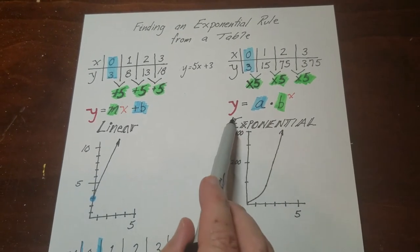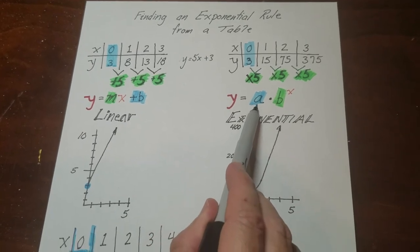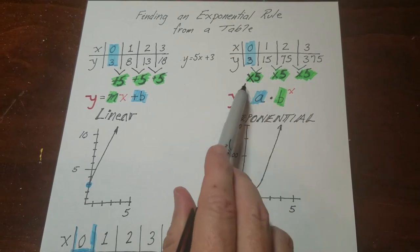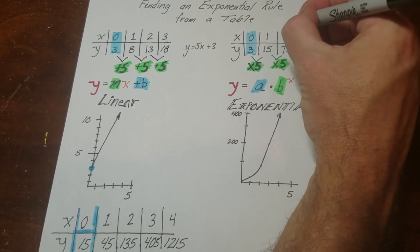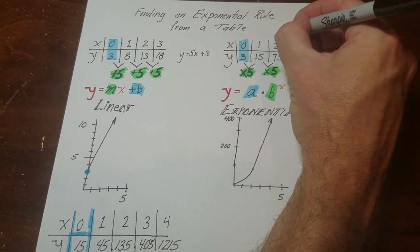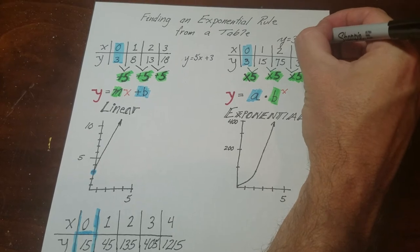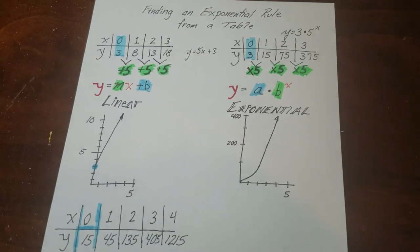And this is the way these rules are set up. So you can see that our initial value, that's our 0 step. That's right here. And then the b term is the multiplier. So this rule right here would be y is equal to, it starts off at 3, and then we multiply that by 5 to the x power.